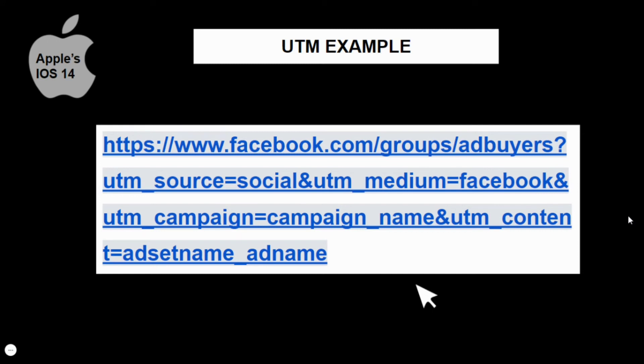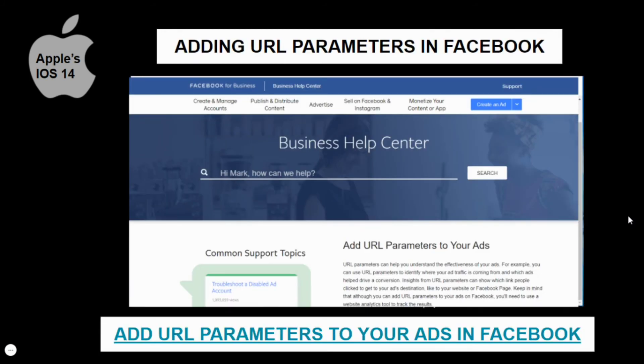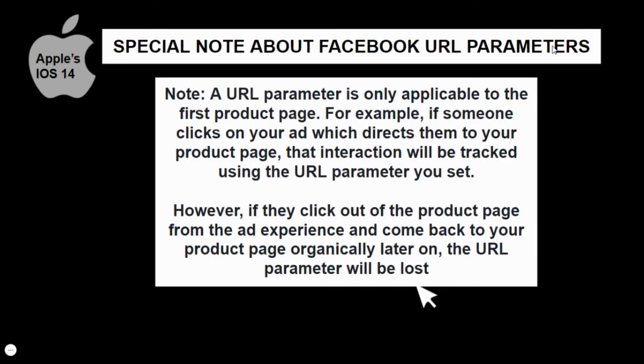Here's what an example UTM parameter would look like on a live URL. Facebook also has the option of creating dynamic parameters, meaning it will automatically copy your campaign and ad set names. This is outside the scope of this video, but I'll leave a link here in the slides for you to access detailed instructions. It's important to note that when you make a URL parameter in Facebook, it's only applicable to the first product page. For example, if someone clicks on your ad which directs them to your product page, that interaction will be tracked using the URL parameter you set. However, if they click out of the product page and come back to your product page organically later on, the URL parameter will be lost.